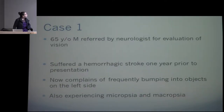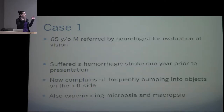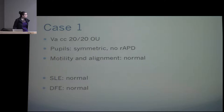Case 1: a 65-year-old man referred by his neurologist to evaluate his vision. One year prior, he had a hemorrhagic stroke, and since then he'd been frequently bumping into objects on his left side. He was also describing micropsia and macropsia — when walking down a hallway, the walls seemed to be getting bigger and smaller. His acuity was 20/20 in both eyes, no APD, normal motility and alignment, normal slit lamp and fundus exam.